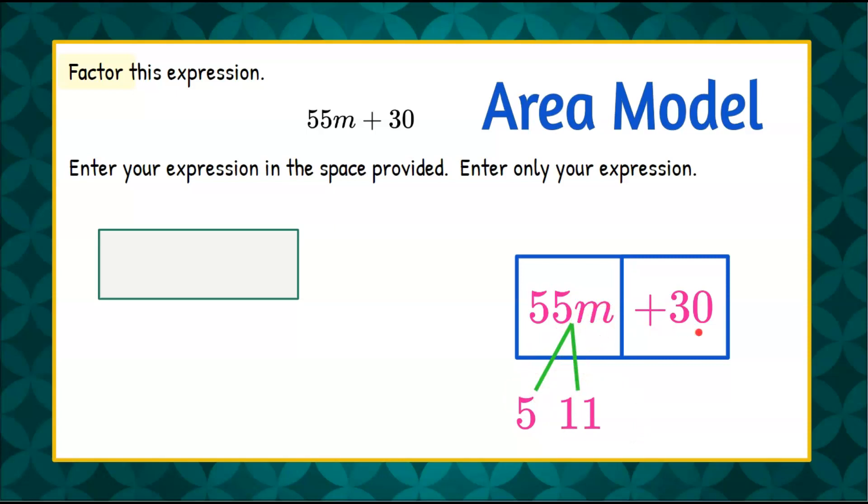Now let's factor 30 and try to consider that we're going to use one of these factors because that's what we're looking for is a common factor. Well we know that 11 is not evenly divisible into 30 but 5 is definitely a factor of 30. 5 times 6 is 30.